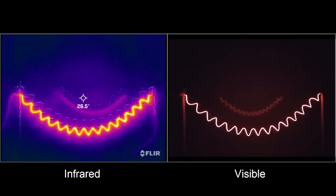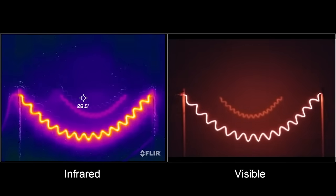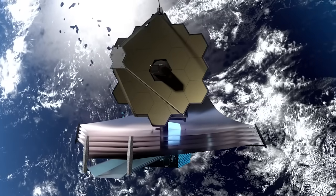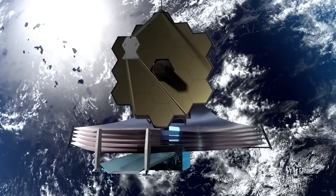The side of the telescope that faces the Earth and the Sun could rise to 110 degrees Celsius, or 230 degrees Fahrenheit, without its sunshield.